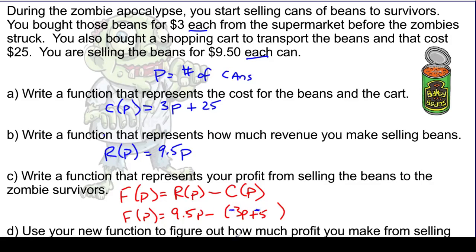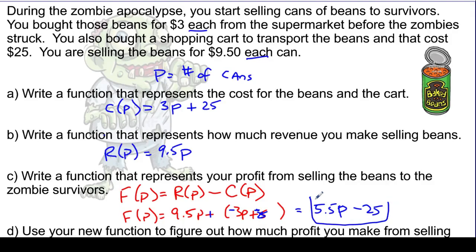This is important because the minus sign gets distributed to both terms. So it becomes 9.5P minus 3P minus 25, which simplifies to 5.5P minus 25. This function represents my profit: $5.50 per can, minus the $25 from transportation. That's my profit function.